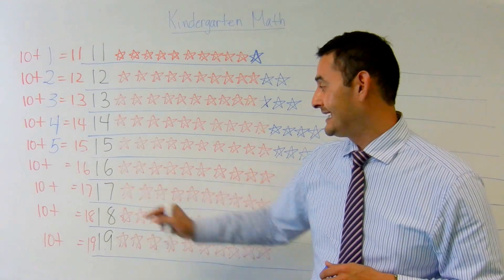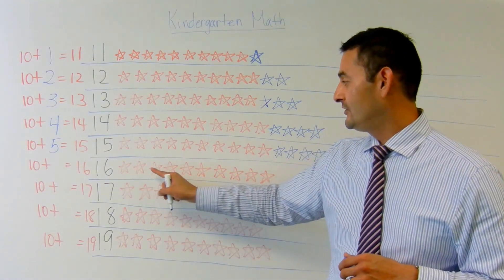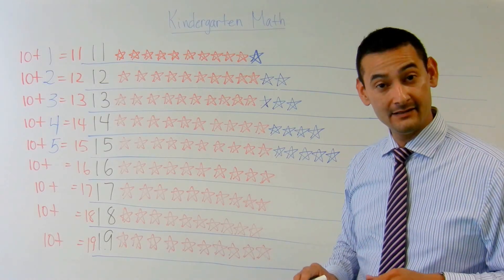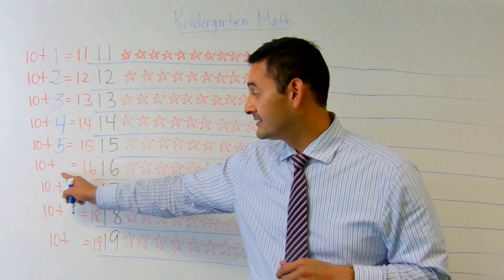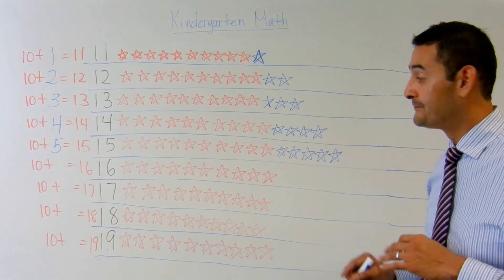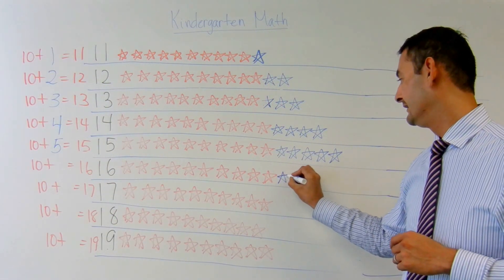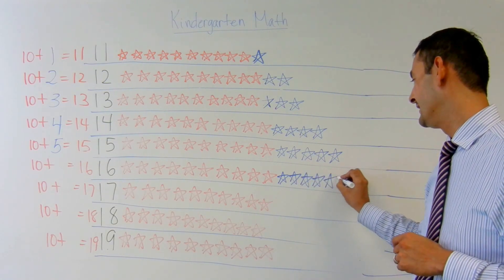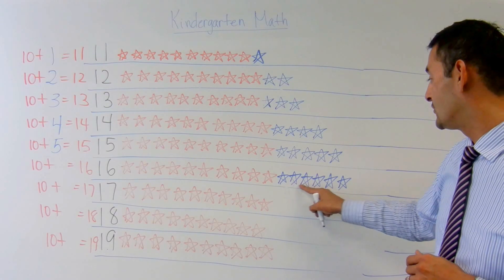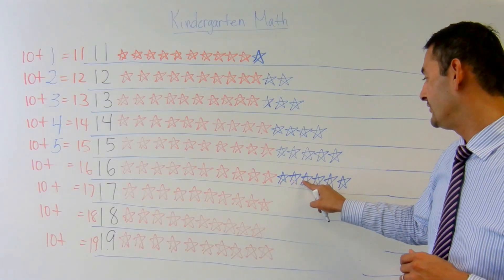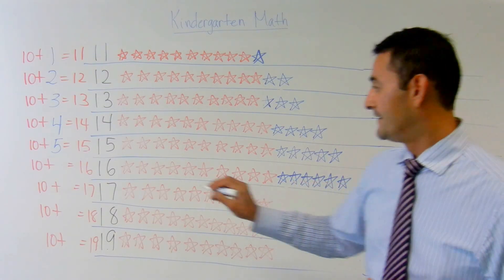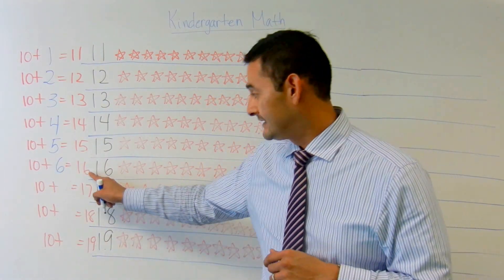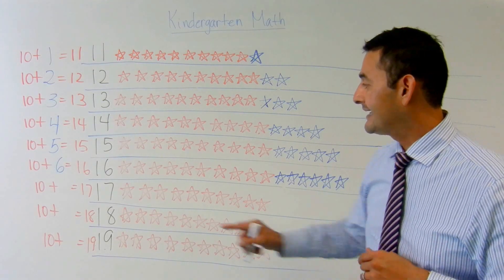Now let's take a look at 16. I've got 1, 2, 3, 4, 5, 6, 7, 8, 9, 10 ones plus how many more ones is going to equal 16. Let's see: 10, 11, 12, 13, 14, 15, and 16. How many ones do I have here? 1, 2, 3, 4, 5, 6. 10 ones plus 6 more ones equals 16.